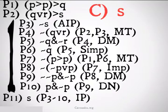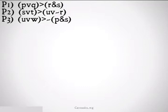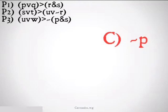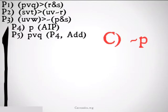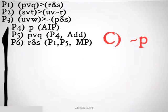Let's take a look at something a little bit more difficult. We have premise 1: P or Q implies R and S. Premise 2: S or T implies U or not R. Premise 3: U or W implies it's not the case that P and S. Our goal is to conclude not P. Once again, if we have that single variable, we should think of indirect proof. We're going to assume P and draw a line going down. From P we can get P or Q by addition, and then do modus ponens on premise 1 to conclude R and S — 1, 5 modus ponens.